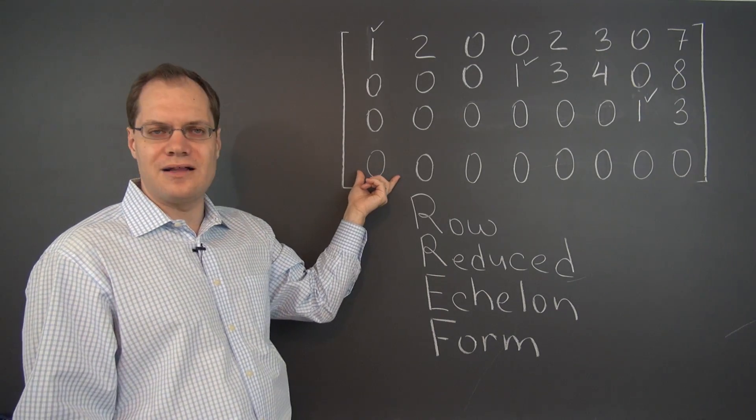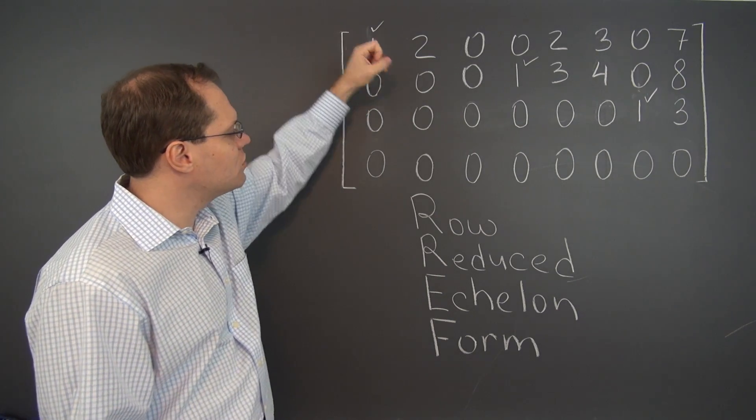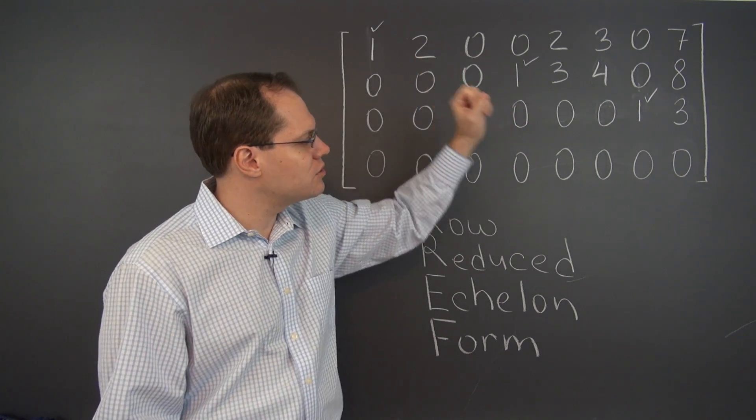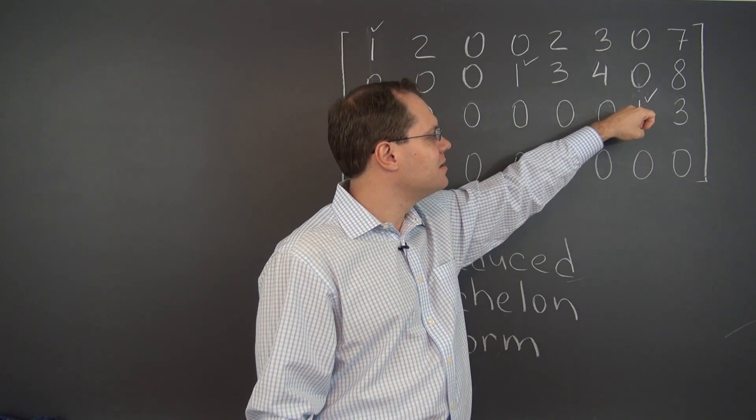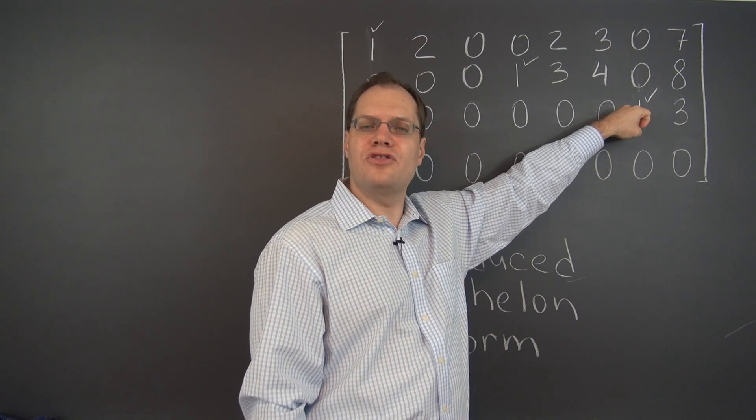So the first pivot column has a pivot in the first row, the second pivot column has a pivot in the second row, and the last pivot column has a pivot in the third row.